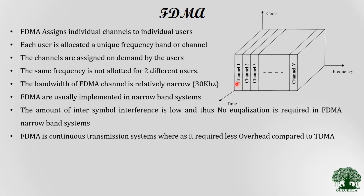Since there is no separation on the time scale, whatever channel is allocated to a particular user can be used continuously for the entire period of communication. Once the communication is complete, the channel is returned to the base station. This is what we call continuous transmission in FDMA.